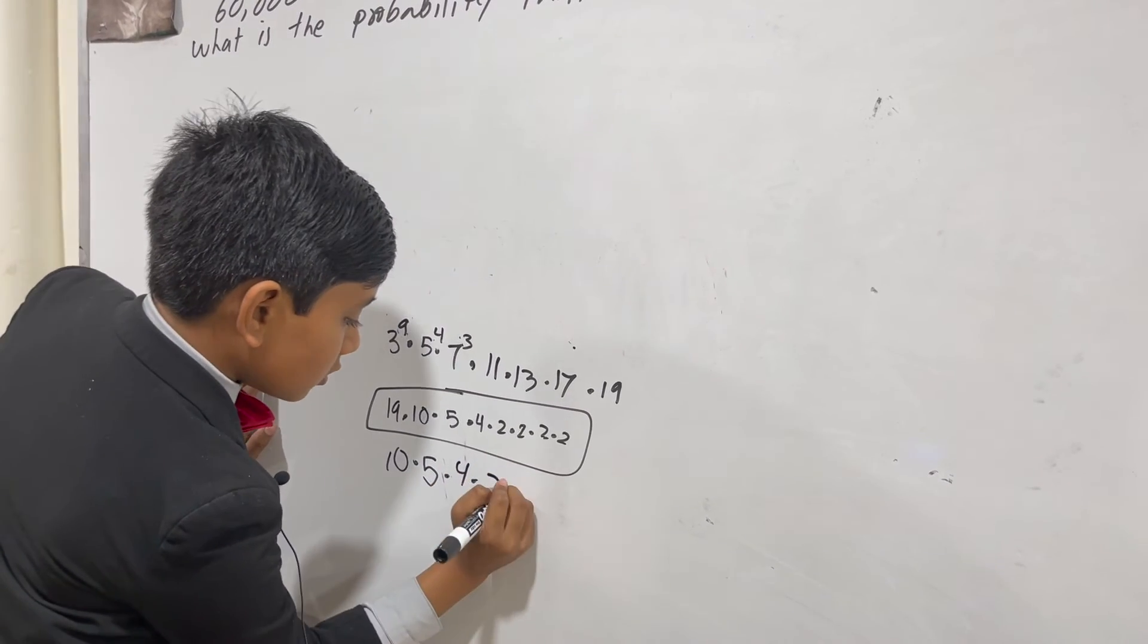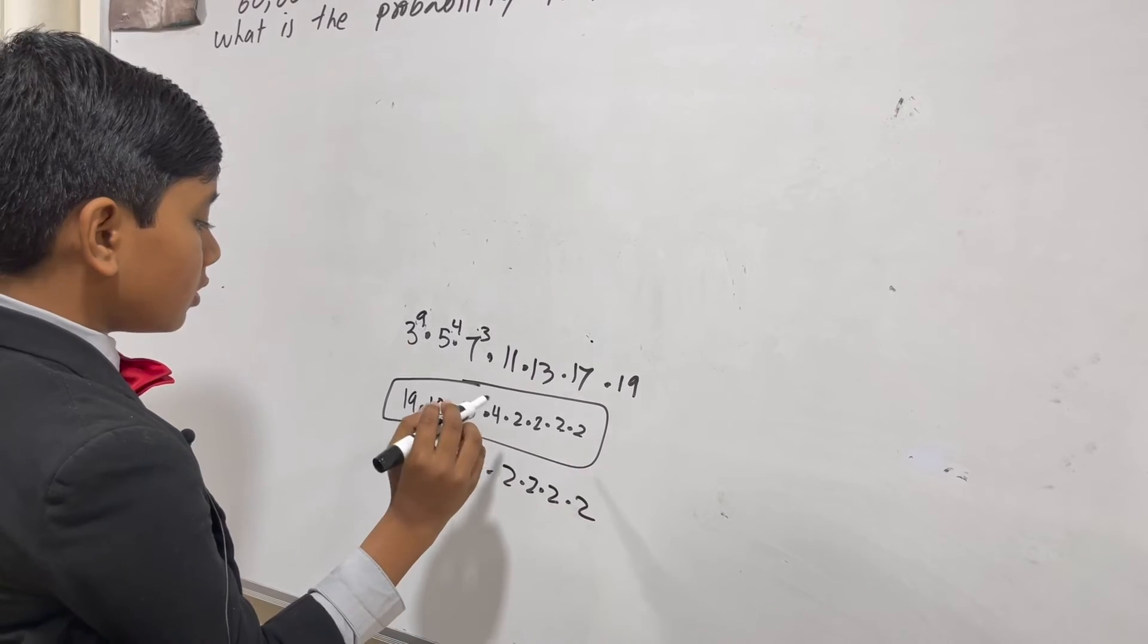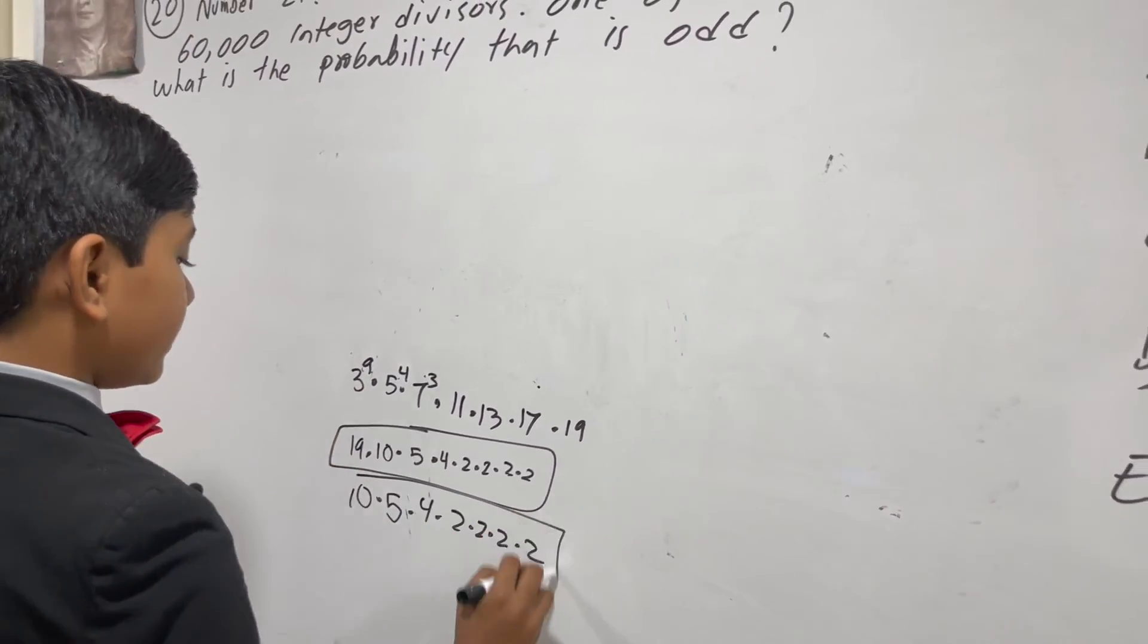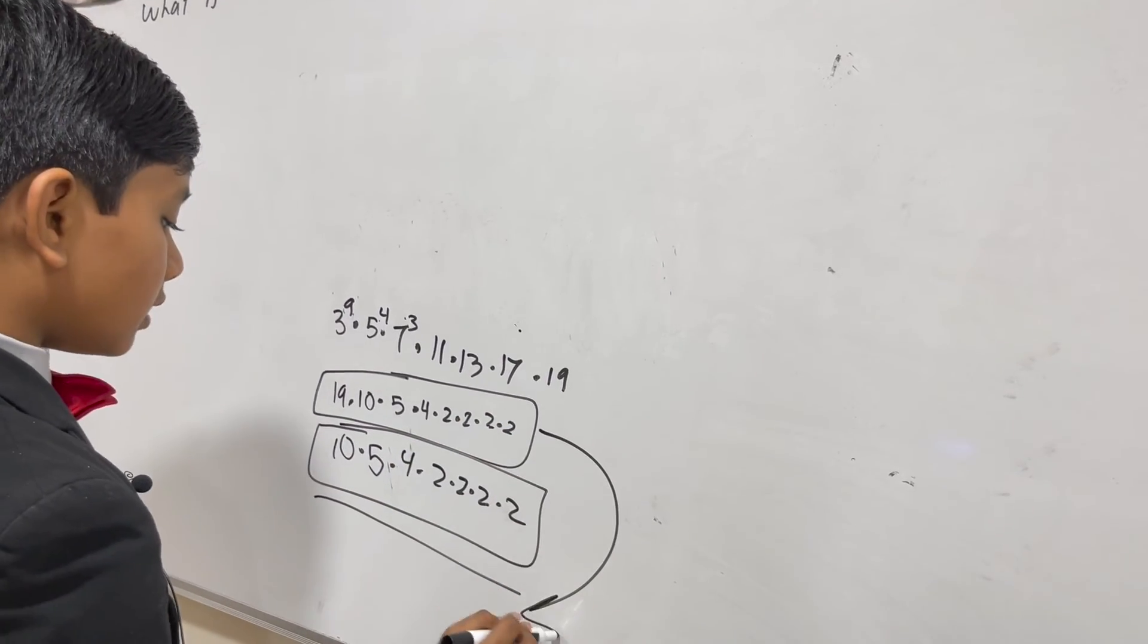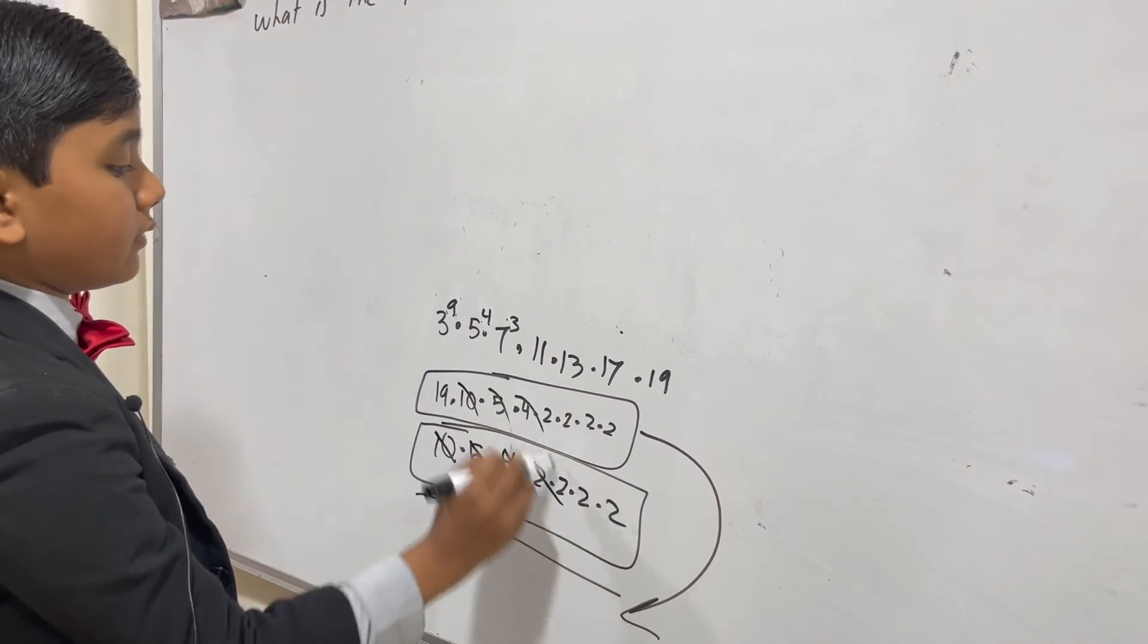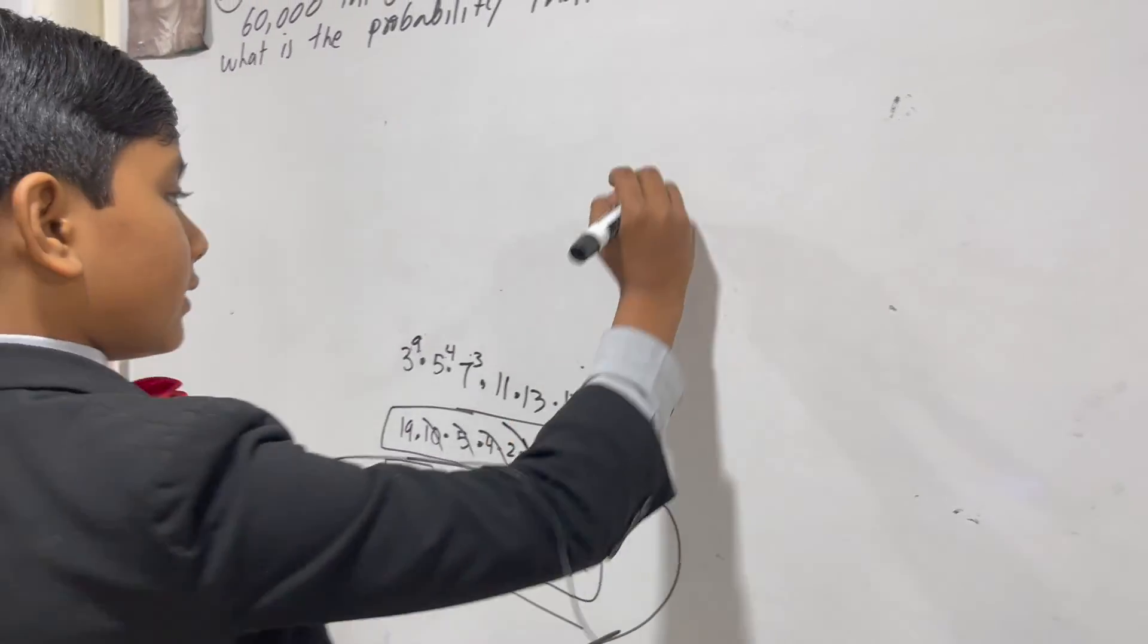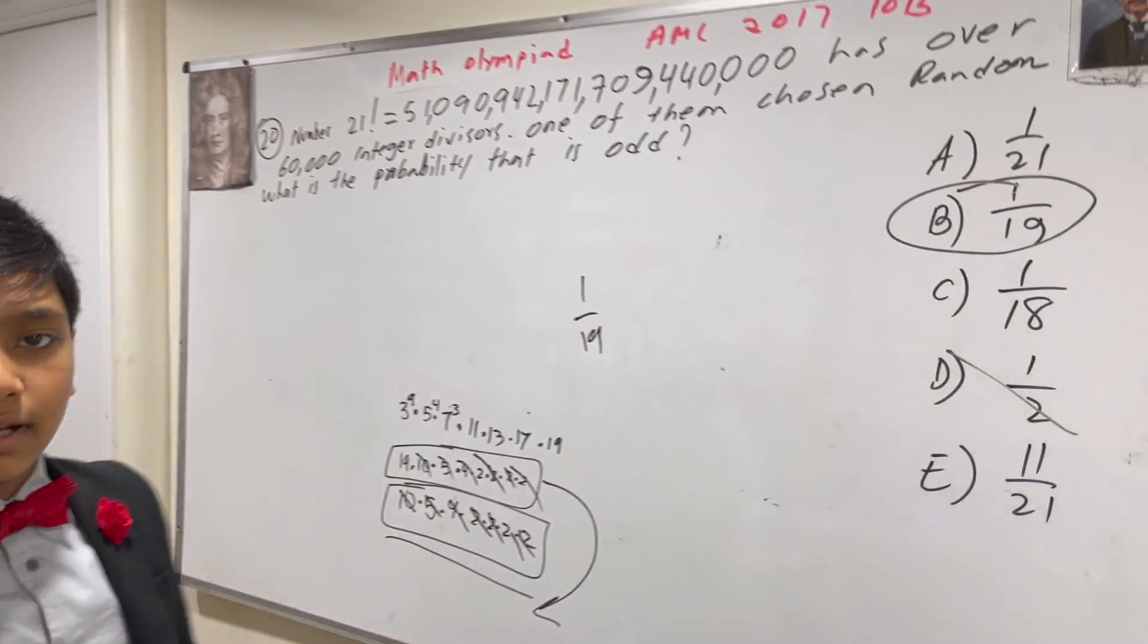And now we divide one by the other. So we take this and we divide it by this. And what cancels out? That gives you 1 over 19, which is B. Thank you everybody for watching. We'll see you in the next one.